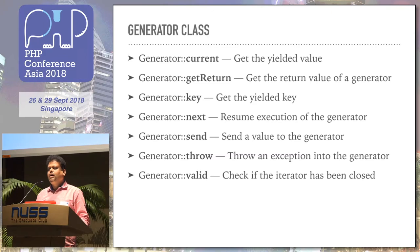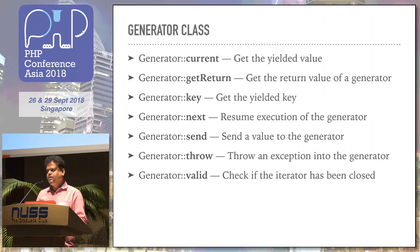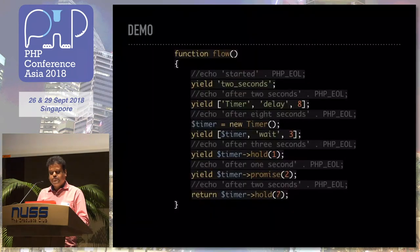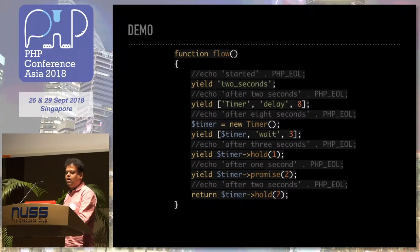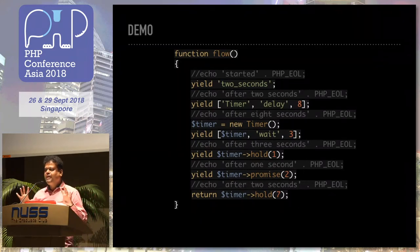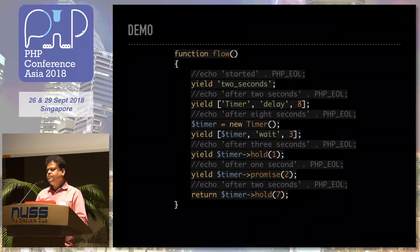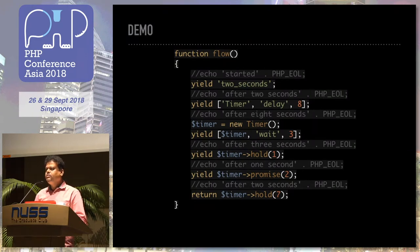Once finished I can get the return value. If it is valid, I can send some value into the generator and also read the value from there to execute the flow. I will show a demo of a very simple function — if I take the Ethereum code it would be too complex. So I support these scenarios: I have a function called two_seconds which will use ReactPHP's timer to delay for two seconds, not sleep. After two seconds it should resume.